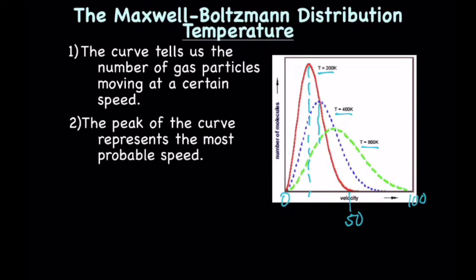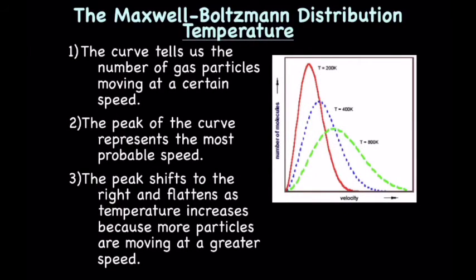The average velocity is higher, maybe 40 meters per second. And if we increase the temperature even more, you will note that the velocity is even higher. So the peak shifts to the right and flattens as the temperature increases, because more particles are moving at a greater speed.